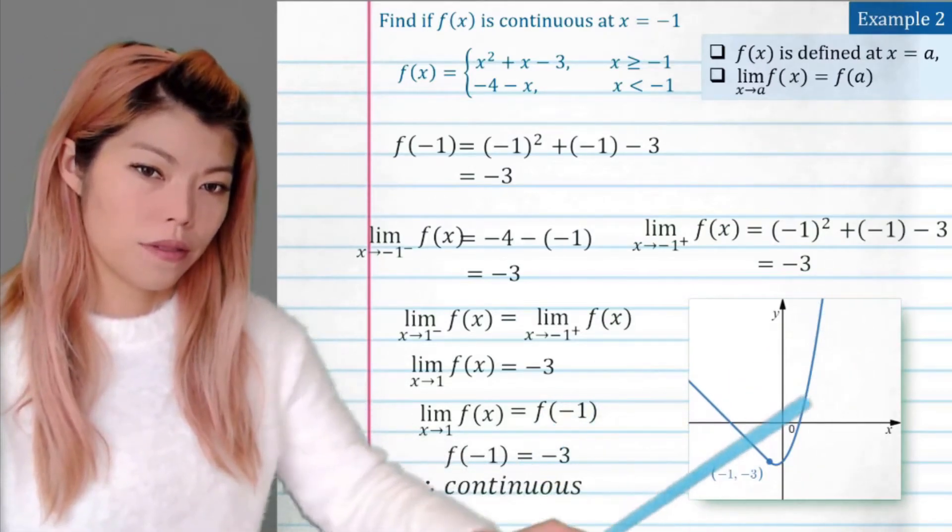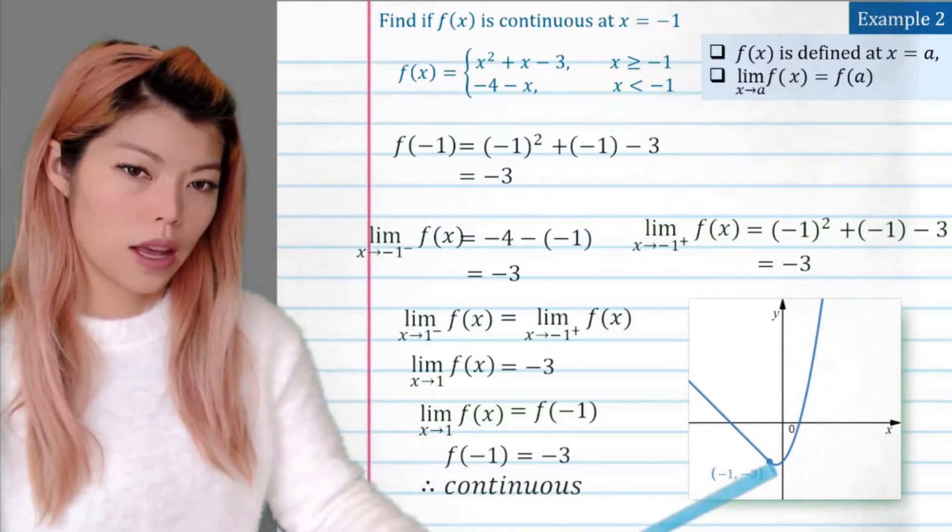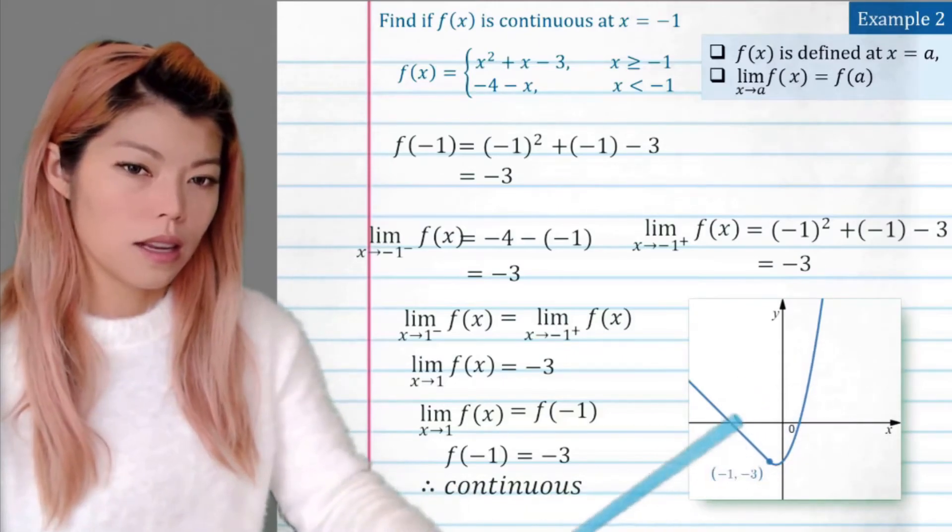So we can see the graph shows us that that point there is also continuous. See, there's no gaps.